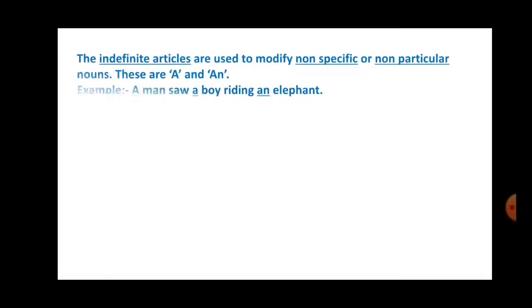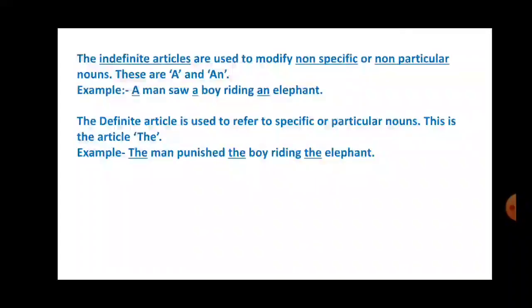Now the indefinite articles are used to modify non-specific or non-particular nouns. These are a and an. For example, a man saw a boy riding an elephant. Here you see for all the nouns like man, boy,